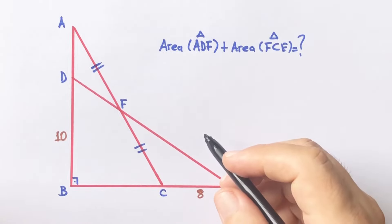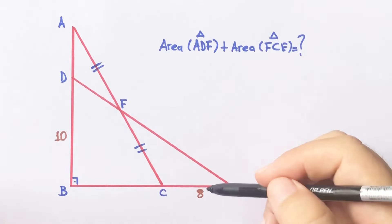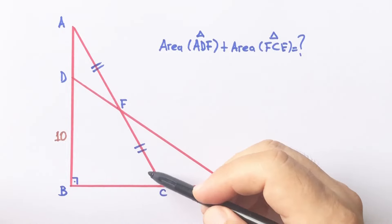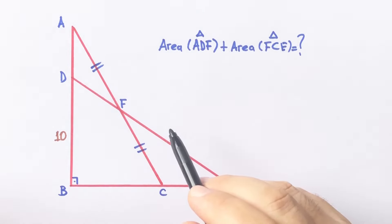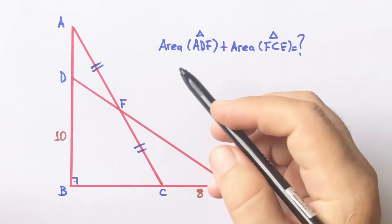Hello everyone, in this video we will solve an area question in the triangle. Well, here is 10, here is 8, and here is 90 degrees. These two parts are equal. The sum of the areas of triangles ADF and FCE is asked.